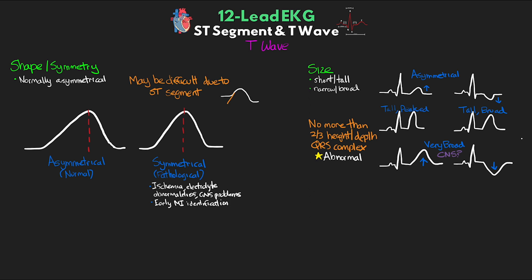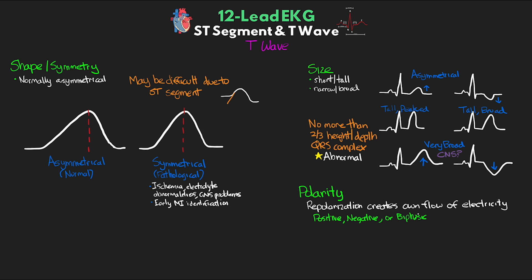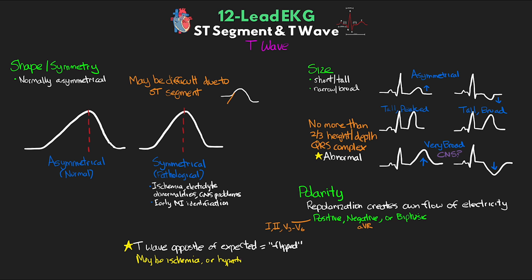The last thing to discuss with T-wave morphology is polarity. Repolarization of the ventricle creates its own flow of electrical activity. We can see positive, negative, and biphasic T waves. Normally we expect positive T waves in leads I, II, and V3 through V6, and negative T waves in aVR. The rest of the leads can be variable. If the T wave is in the opposite direction than expected, this is called a flipped T wave. Flipped T waves can be a sign of myocardial ischemia, though we can also see them with hypertrophy and bundle branch blocks. Biphasic T waves with the first part positive are often normal, while biphasic T waves with the first part negative are more likely to be pathological.